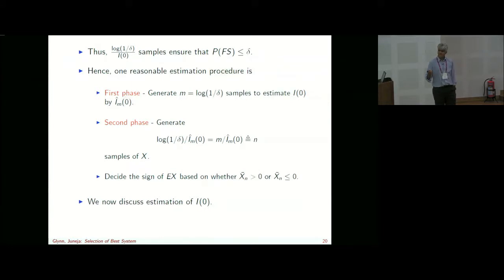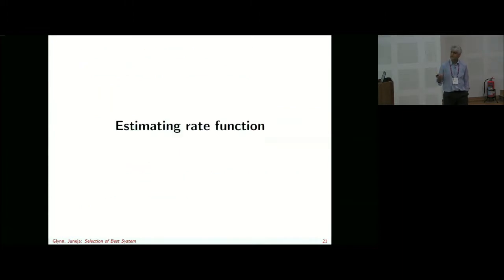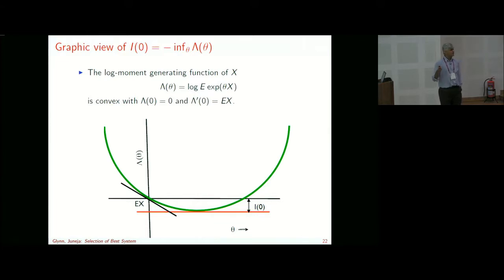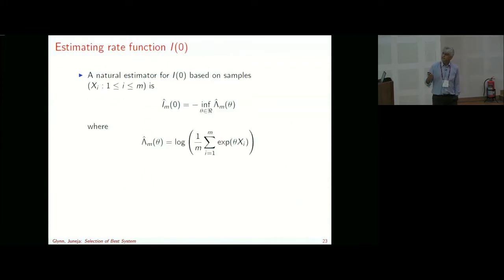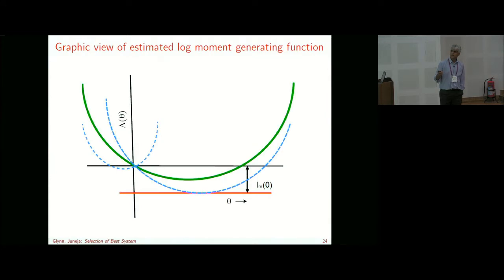Similarly for a < I(0): if the rate function takes a deviation downward, it will be the supremum of rate functions over theta, because that would cause one of the empirical averages to take a large deviation upward. All of them have to go up, so the worst-case most-likely one determines the rate function. Once we have these estimators — generating this many samples as estimator for the rate function in phase two — the probability of false selection, given we have that many samples with I(0) as the true rate function, is an expectation of an exponential term, which by Varadhan's integral lemma has a nice closed-form representation.